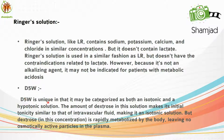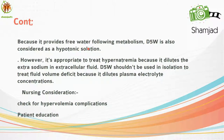D5 water is unique in that it may be categorized as both an isotonic and a hypotonic solution. The amount of dextrose makes its initial tonicity similar to that of intravascular fluid, making it isotonic. But dextrose in this concentration is rapidly metabolized by the body, leaving no osmotically active particles in the plasma, so D5 water is also considered a hypotonic solution. It is appropriate to treat hypernatremia because it dilutes the extra sodium in the extracellular fluid. D5 water should not be used in isolation to treat fluid volume deficit because it dilutes plasma electrolyte concentrations.